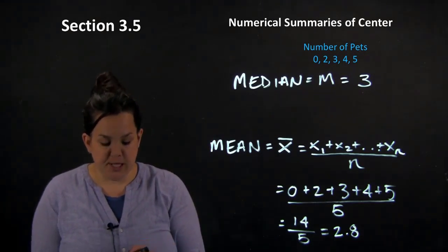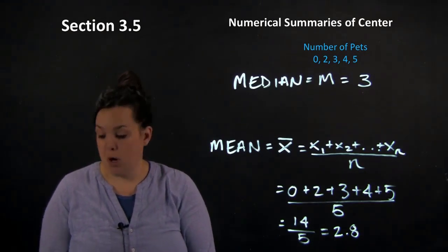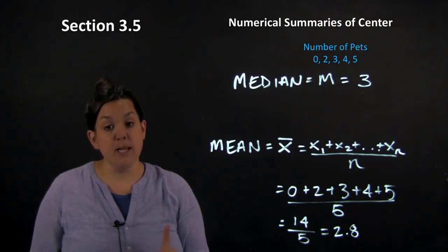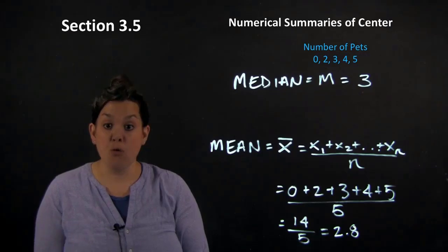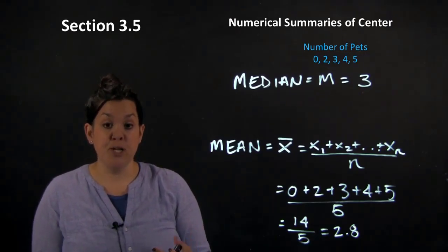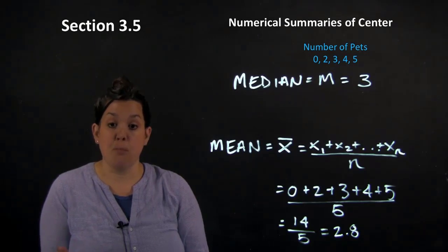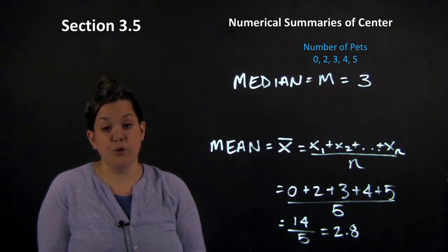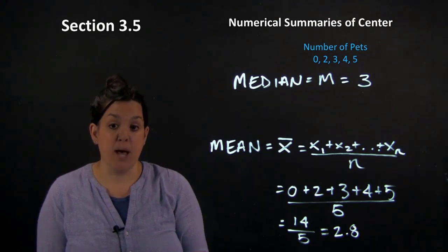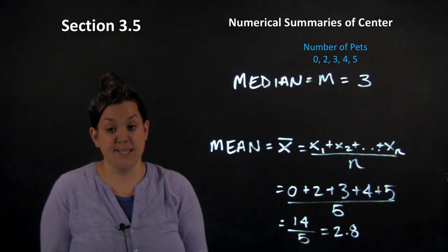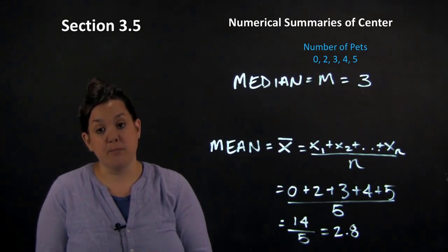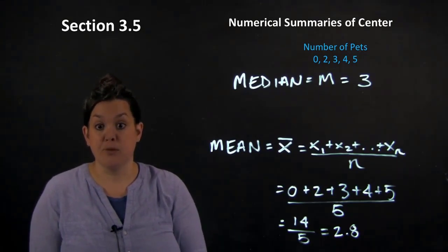So one thing that I want you to consider is situations where you have outliers present. So outliers significantly impact the mean, but don't impact the median as much. So it could also be skewness. So we say that the median is robust against outliers or skewness, and the mean is not. So the mean is significantly impacted by outliers or skewness, and is not therefore robust. But the median is not impacted by outliers or skewness, so it is robust.